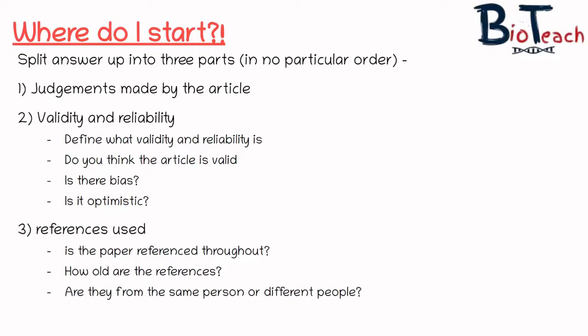The third part of the essay is to talk about the references used — look at the article to see if it's referenced throughout. Most Article 3s so far have been from blogs, journals, or scientific papers with a large number of references at the end, so you have to look at those and assess how old they are. Some might be older and therefore dated and not as valid, but equally older references might demonstrate that the idea or findings have been researched for years and are deemed reliable and valid. You should also consider whether references are from the same person or different people — if 5 out of 10 references are from the same researcher that might affect validity, whereas if different people are corroborating the same theory, that's more reliable.